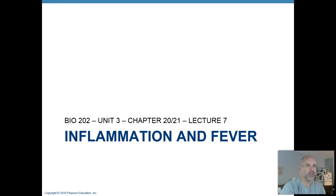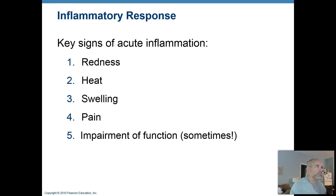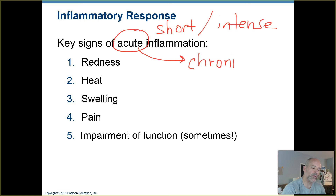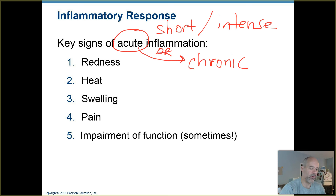We're going to continue and talk about inflammation and fever. Inflammation is a result of the inflammatory response, and there are several key signs of acute inflammation. The term 'acute' refers to something short in duration and intense, as opposed to 'chronic,' which is slower to develop, longer lasting, and not as intense. We just saw those terms with leukemia — acute leukemia versus chronic leukemia — and they're being used in a similar way with inflammation.